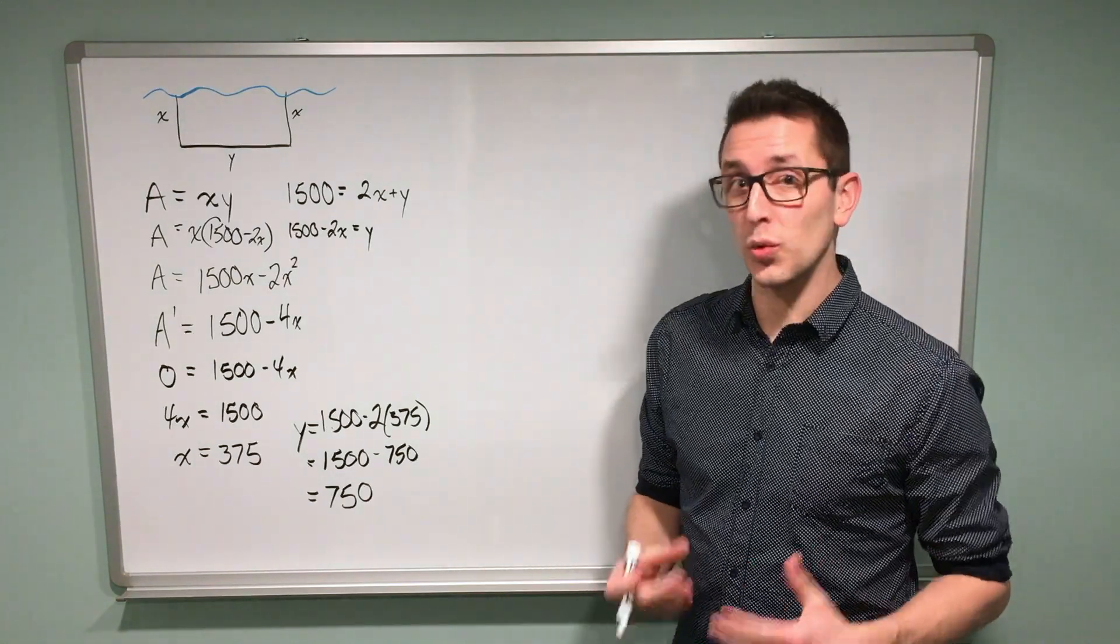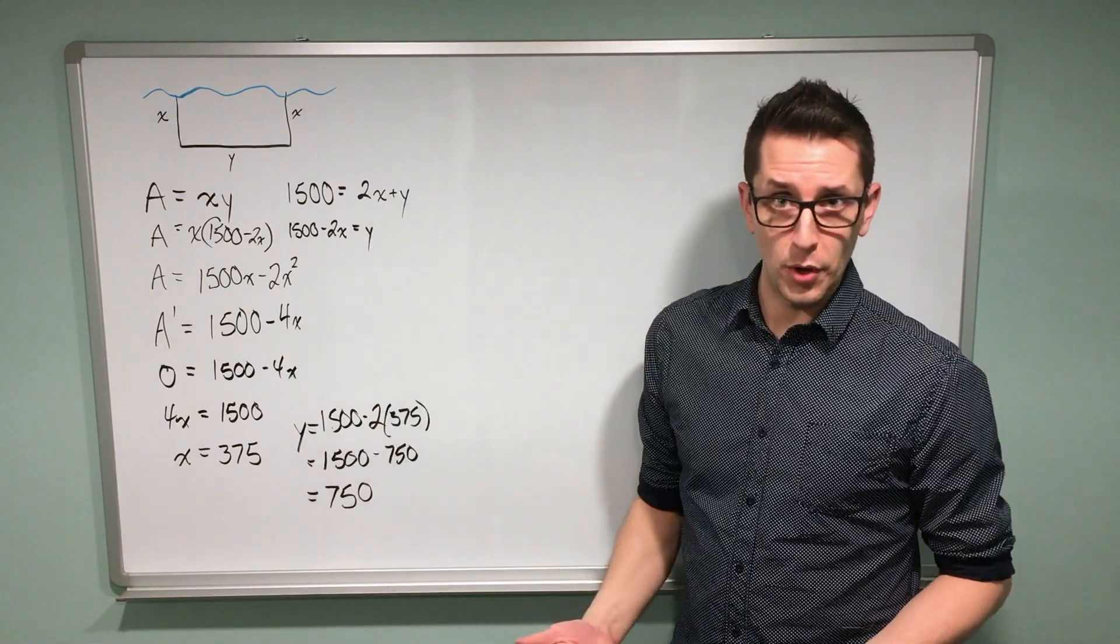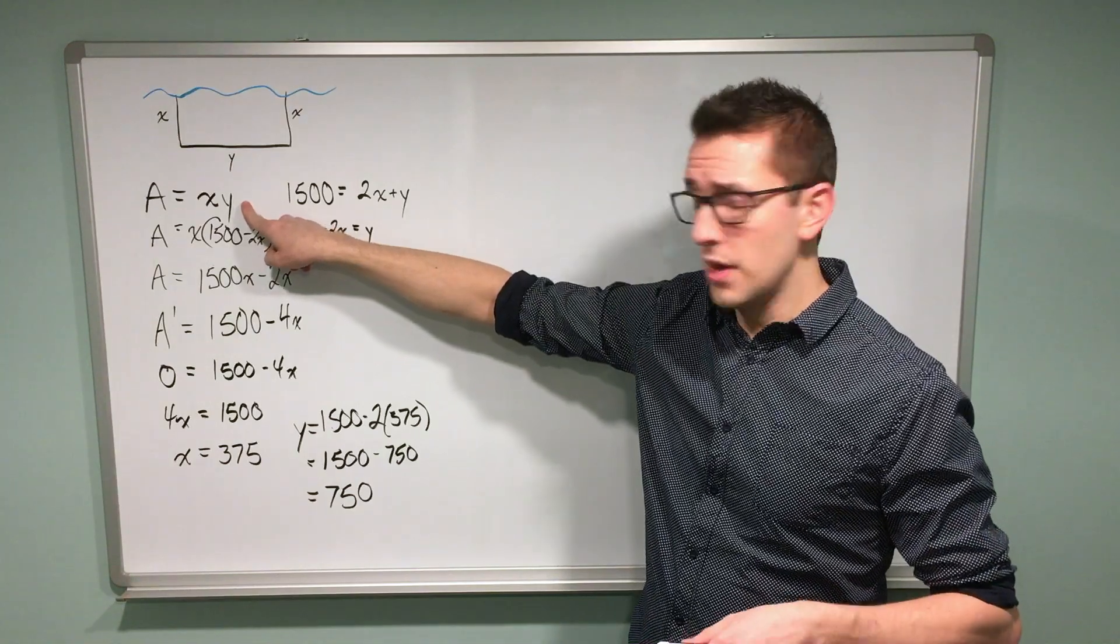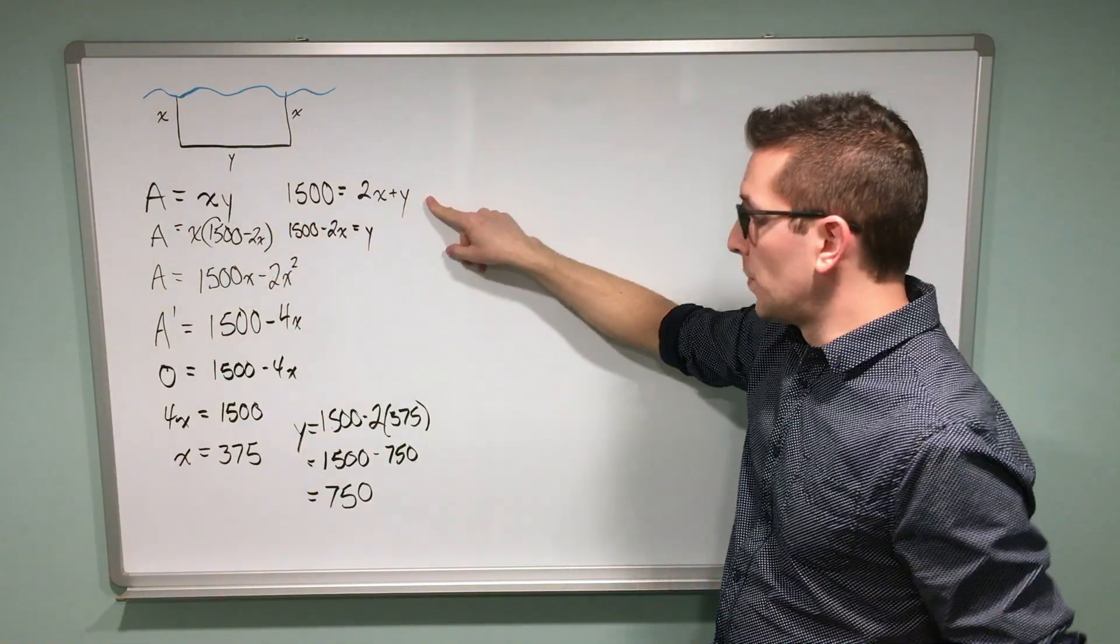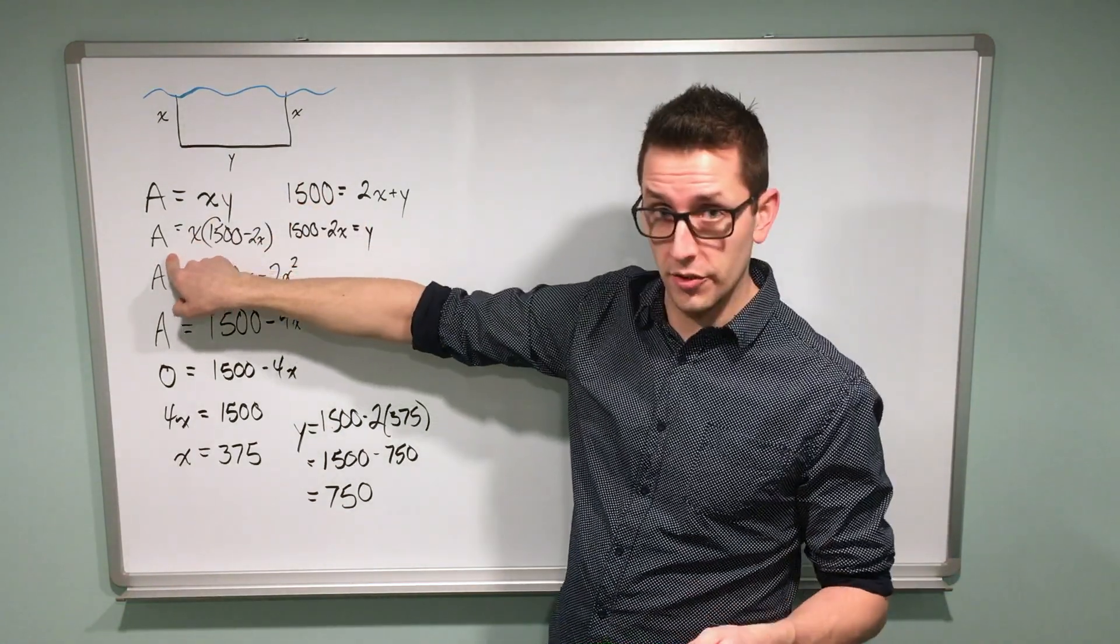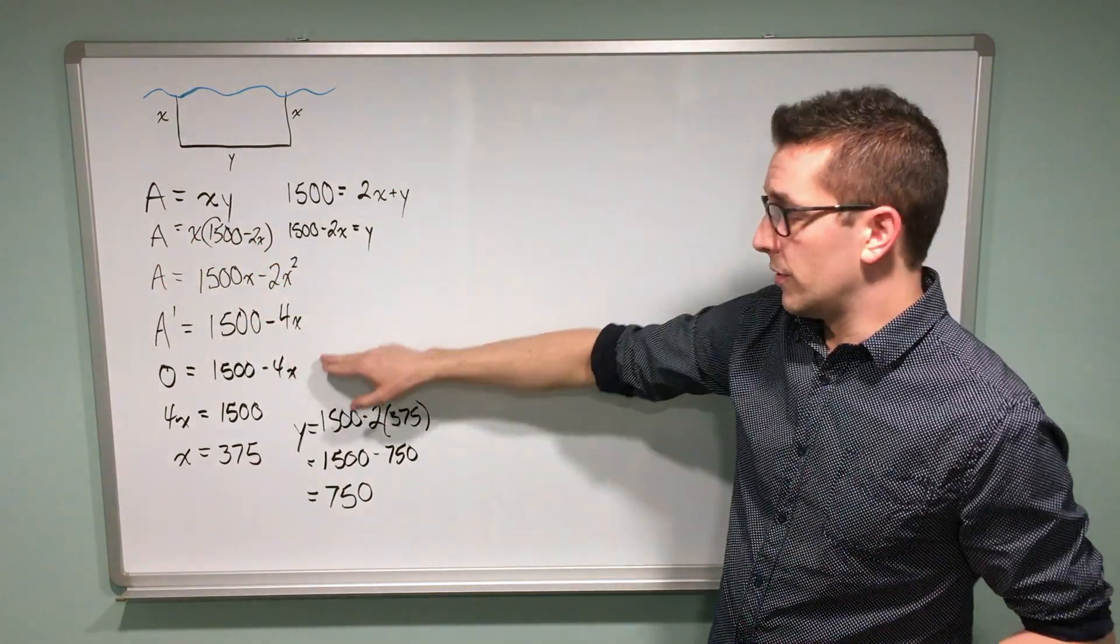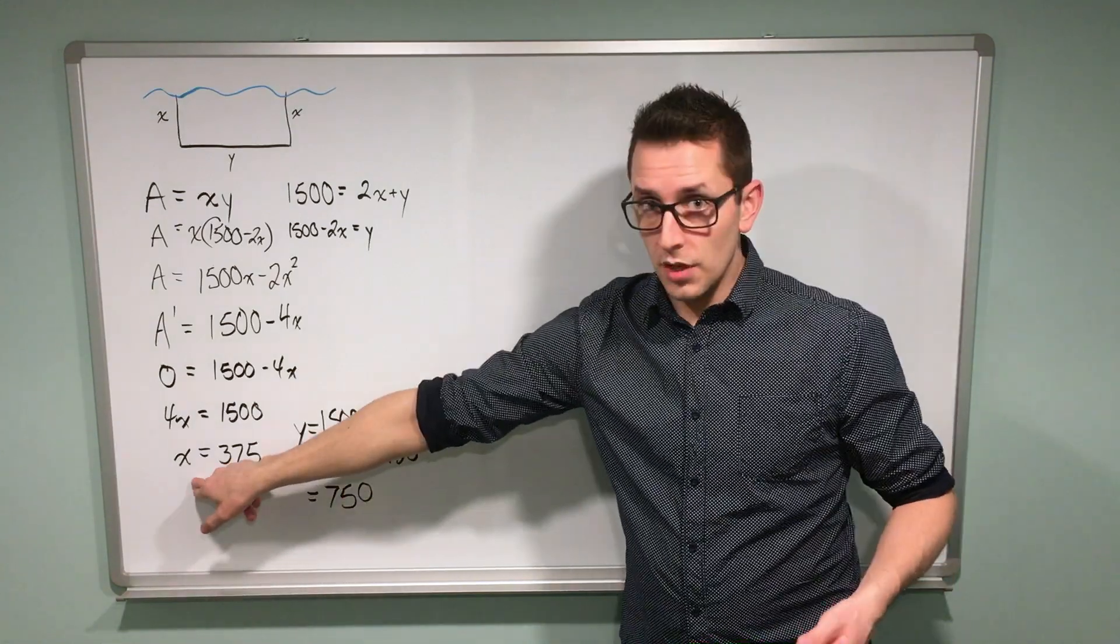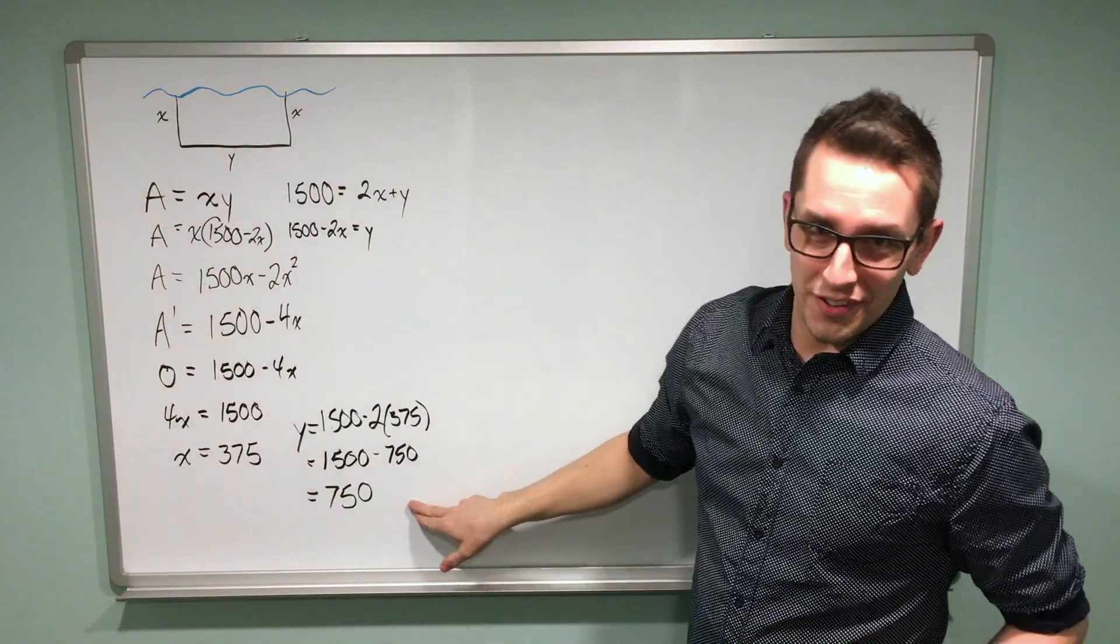In general, these problems can get really complex, but really, at its core, all you're doing is following a very simple process. You're coming up with an expression for the quantity that you're hoping to maximize or minimize. You're coming up with another equation giving the information of the problem, rearranging that equation, substituting into your original equation that you're trying to maximize or minimize. You're simplifying, taking the derivative, setting it equal to zero, and finding one of the dimensions. Once you have the first dimension, you can take that dimension and substitute it into your rearranged equation to solve for the second.